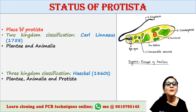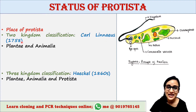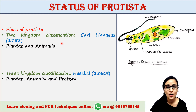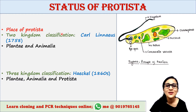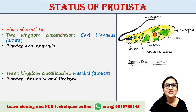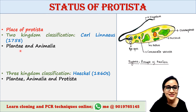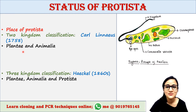Now, the place of Protista in classification history. Carolus Linnaeus in 1758 classified living organisms into two kingdoms: Plantae and Animalia. That is why it is called two kingdom classification. In this system, microorganisms such as bacteria and yeast were classified as plants and placed in Plantae.